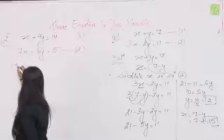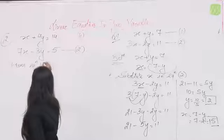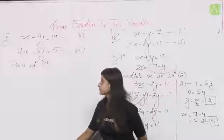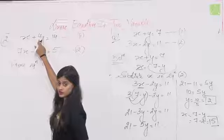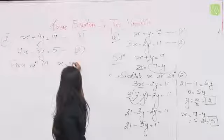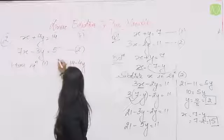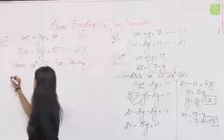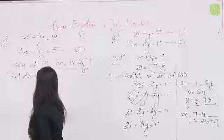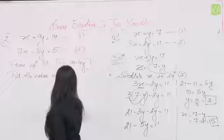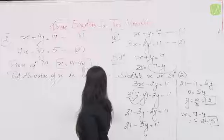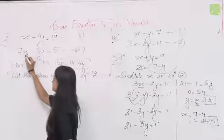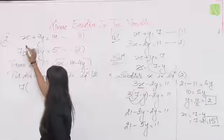From equation 1: x की value find करते हैं। x = 14 − 4y। अब second step: put the value of x in equation 2। Equation 2 में x कहाँ है — वहाँ 14 − 4y put करेंगे।